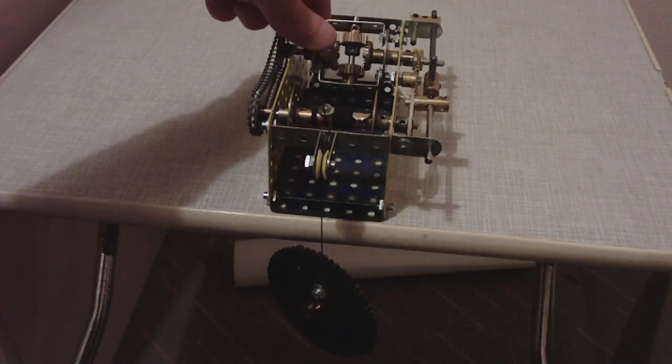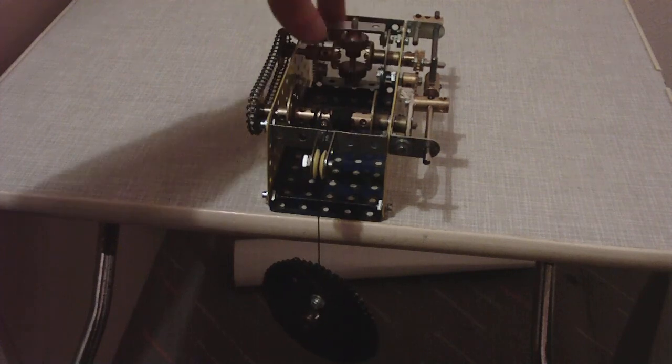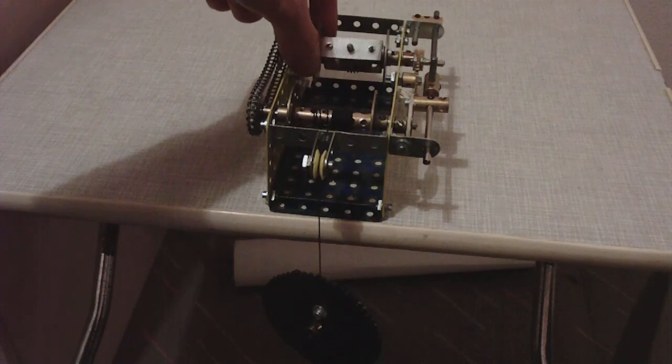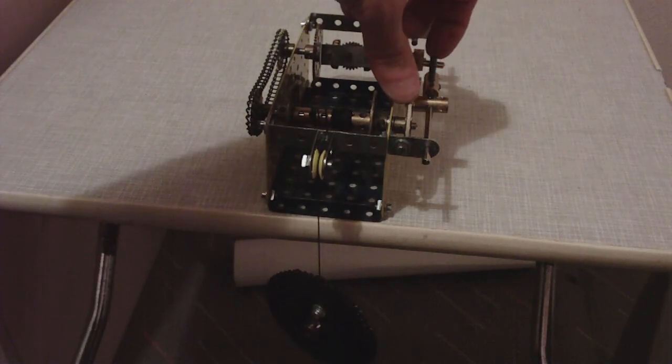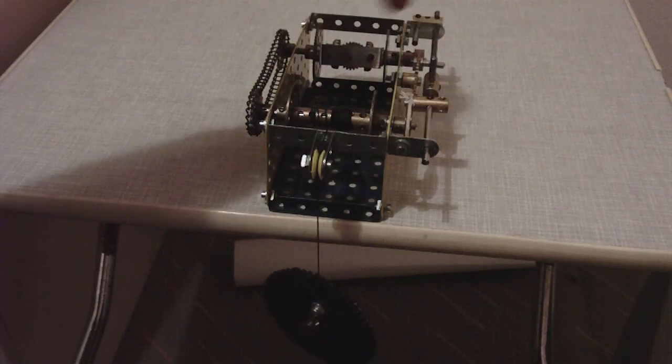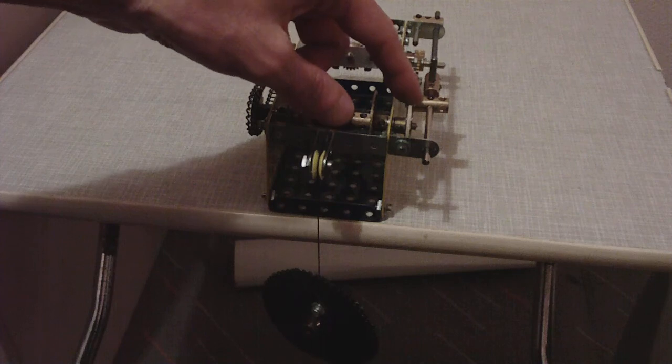When you start turning this, this is called a differential. When you start turning this, it just moves this rod forward slightly and releases the tension on the string.